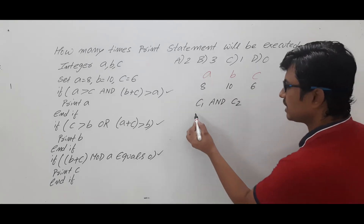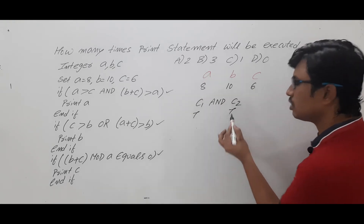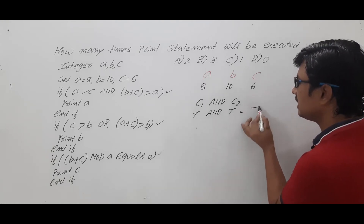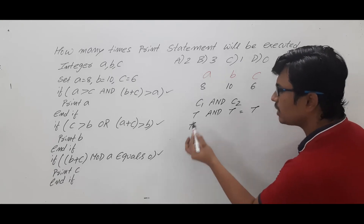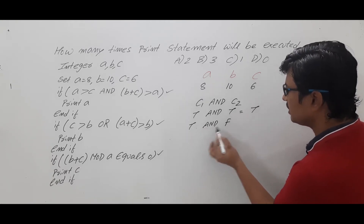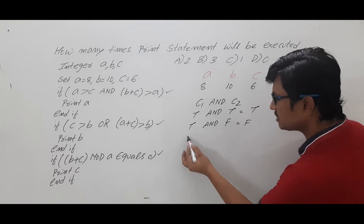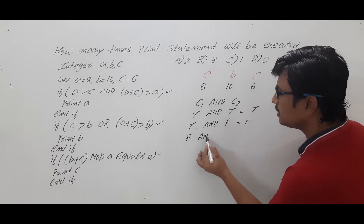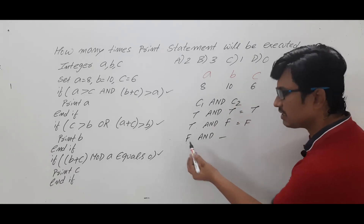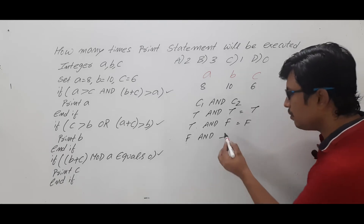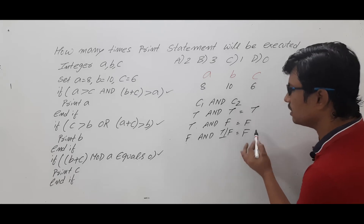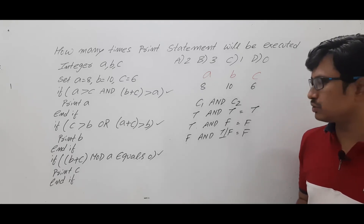If condition 1 is true and condition 2 is false, it will be false. If condition 1 itself is false, you don't need to evaluate condition 2, because whether condition 2 is true or false, it will give you false only. I hope you have understood this.